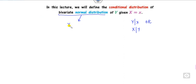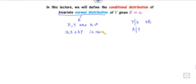To quickly recall: if x and y are two random variables, then if ax plus by is normally distributed, we say (x, y) follows a bivariate normal distribution. That is the definition of the bivariate normal.